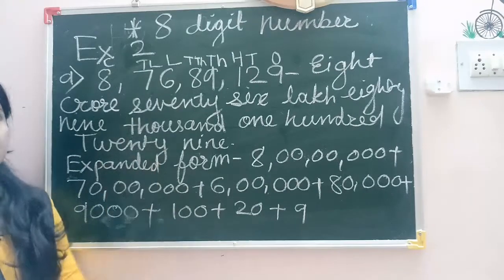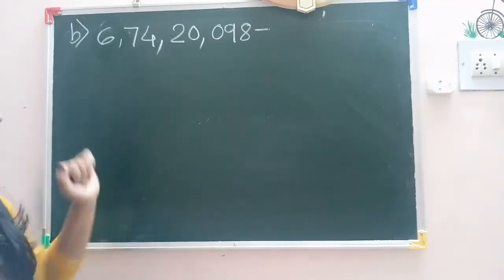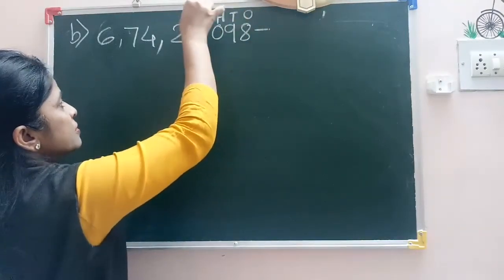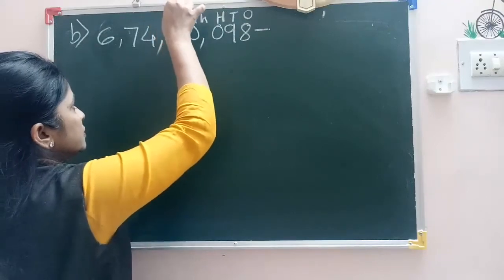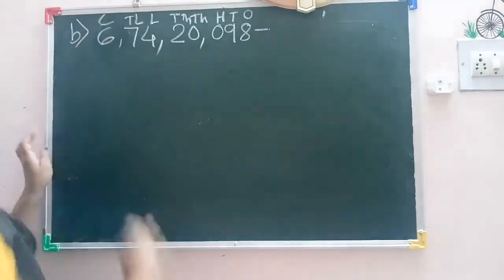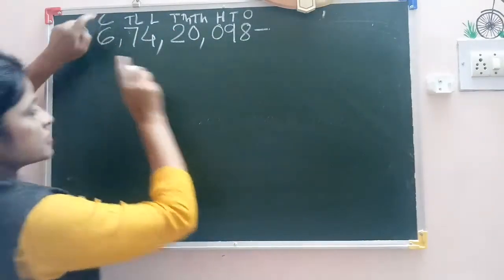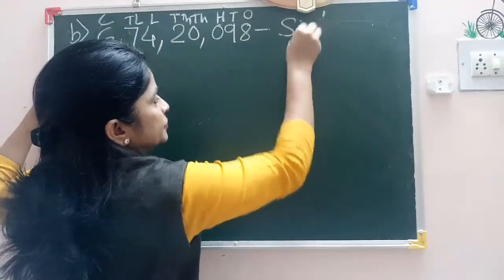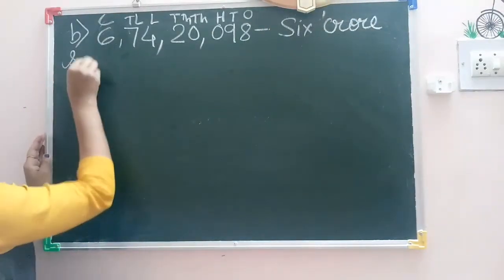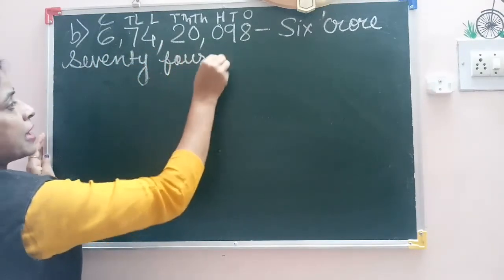This is the expanded form of the given number. Now we have to write the number name and the expanded form. First of all, we will write the place on the number: 1s, 10, 100, 1000, 10,000, lakh, 10 lakh, crore. So we will read the period separately. It will be very easy to write: 6 crore, 70 lakh, 4 lakh.